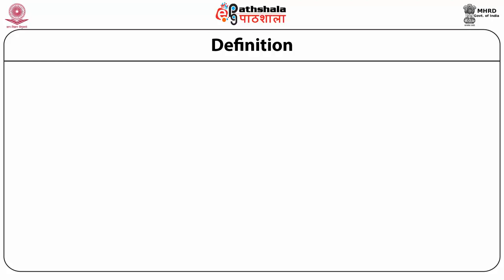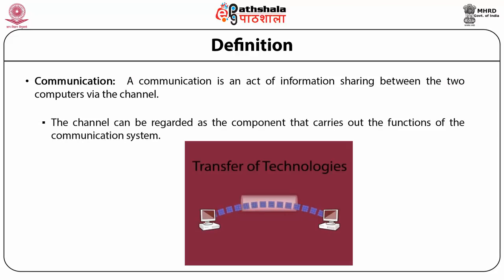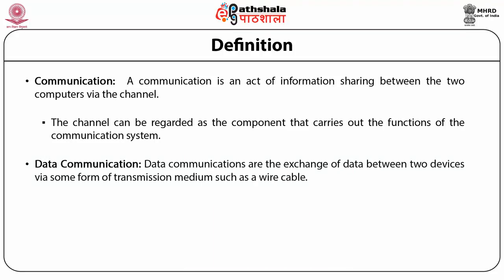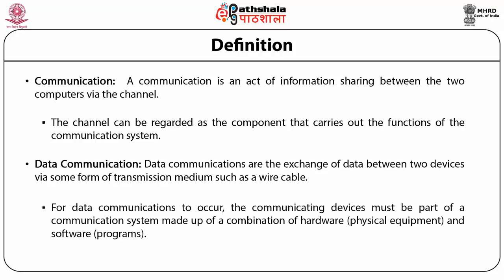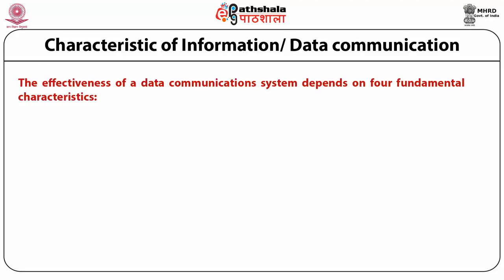Communication is an act of information sharing between two computers via a channel. A channel is the component that carries out the function of the computer system. Data communication is the exchange of data between two devices via some form of transmission media such as wire cable. For data communication to occur, the communication devices must be part of a communication system made up of a combination of hardware and software. The effectiveness of a data communication system depends on four fundamental characteristics: delivery, accuracy, timeliness and jitter.